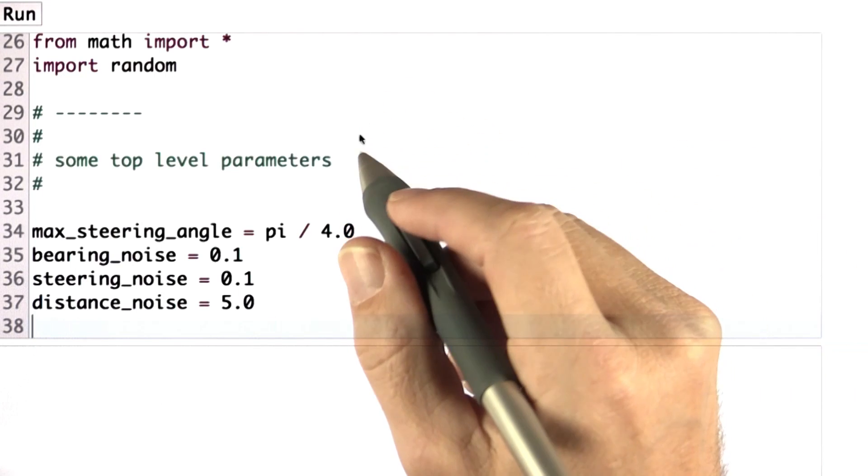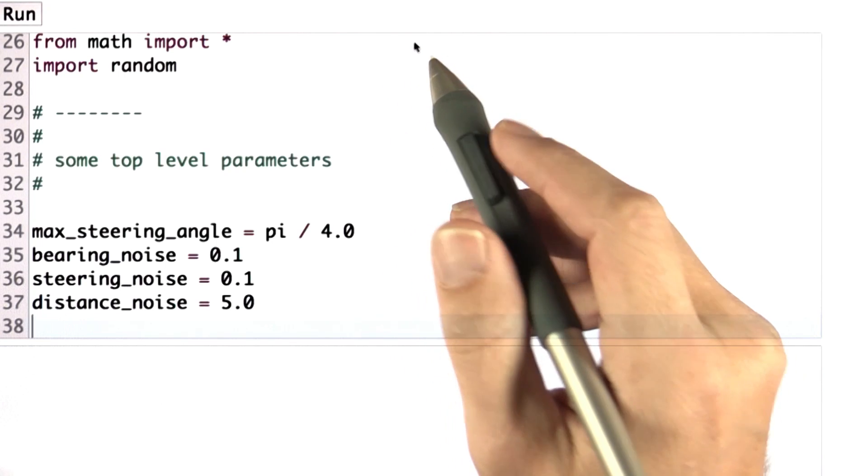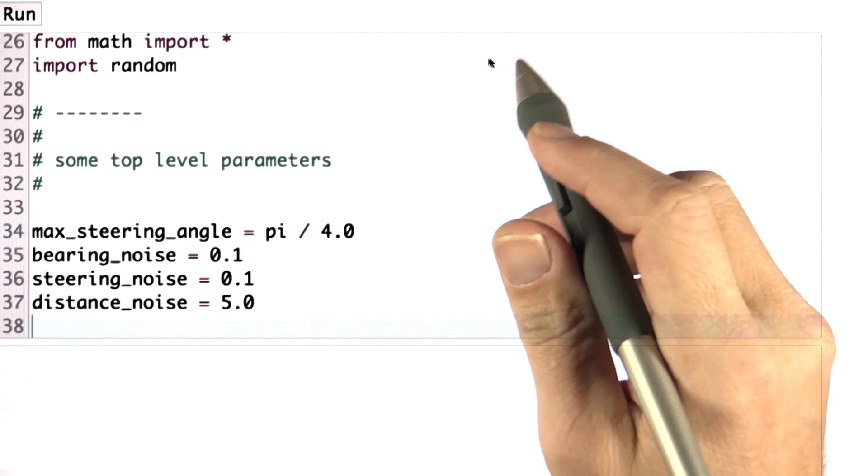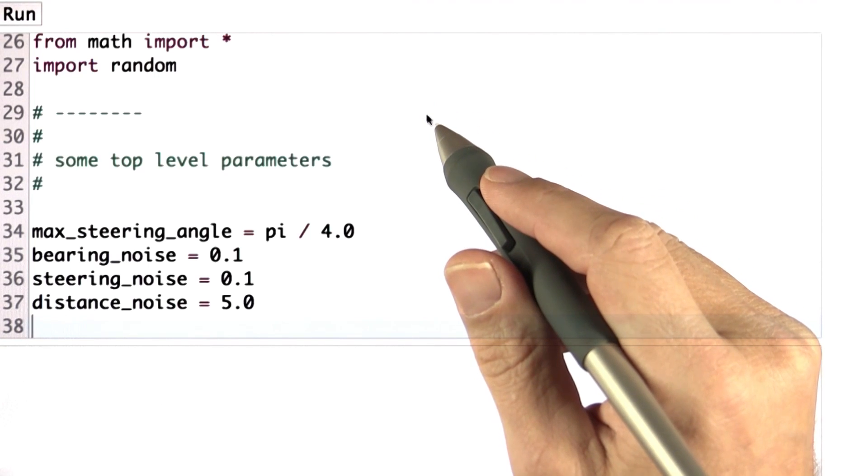So in our final programming exercise, I want you to put everything together and build a particle filter. I'm supplying you with code that has gaps, pretty much the two functions you just programmed, move and sense.